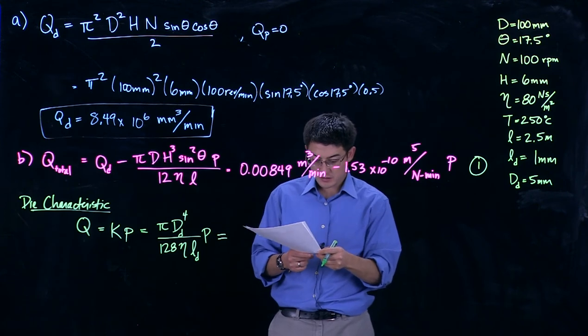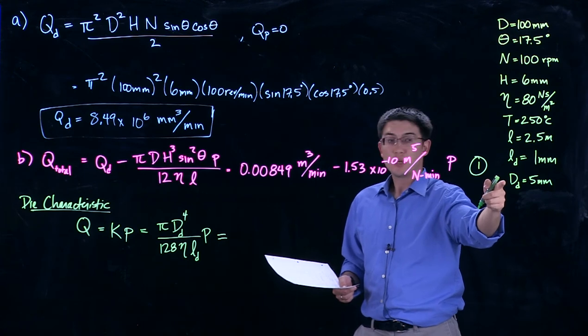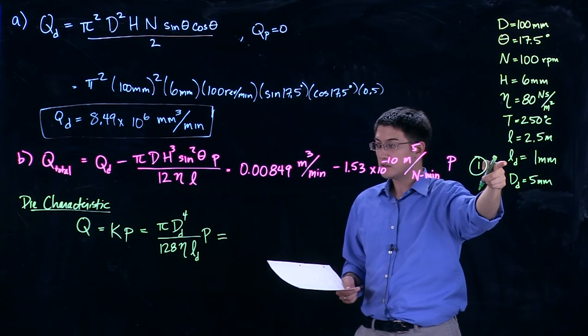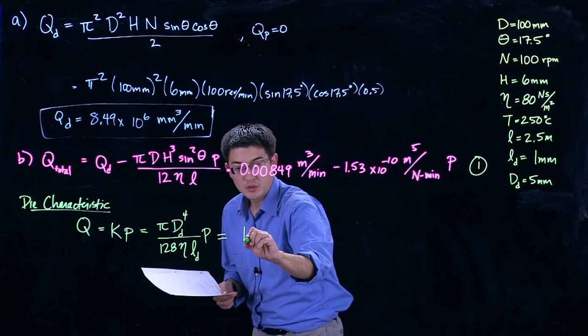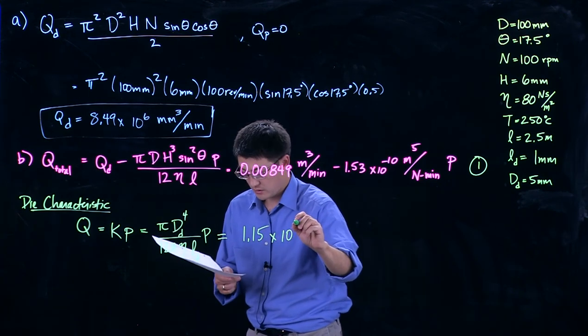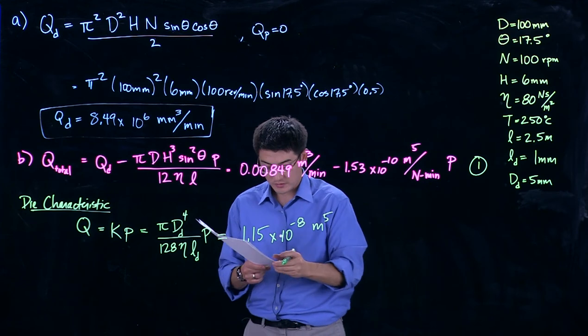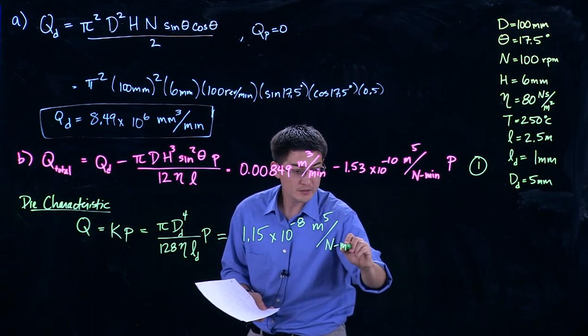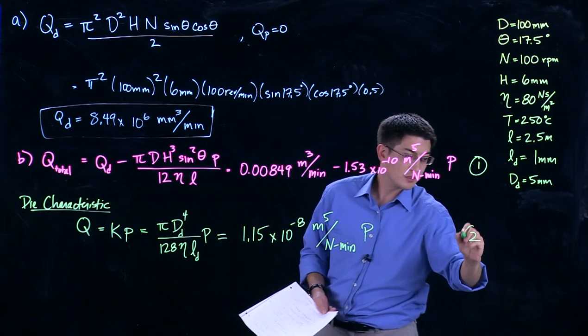If we plug this in, these values we all know. The diameter is 5 millimeters. The viscosity of the material, the length of the die, pressure is the only unknown. So we plug this in, we get 1.15 times 10 to the minus 8 meters, remember to convert your units, to the fifth per Newton minute, times again pressure. I call this equation two.